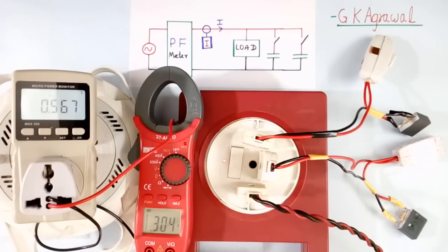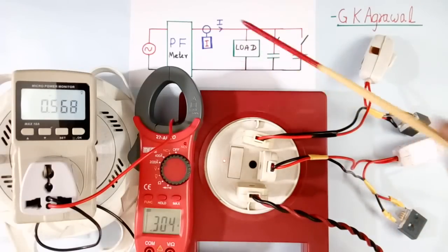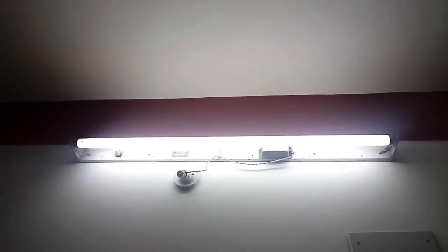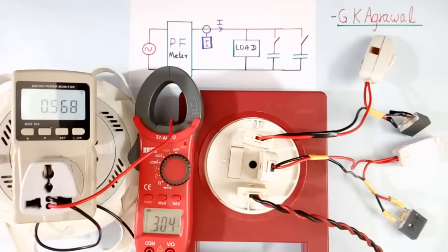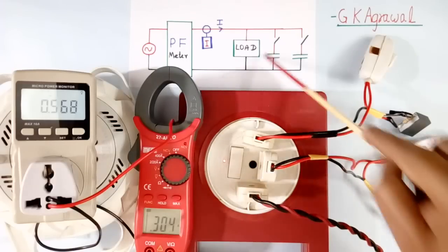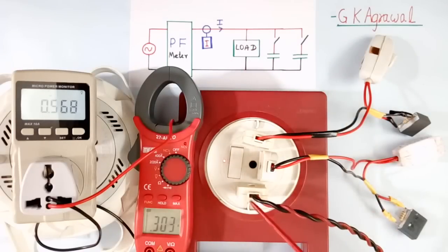Now first we will connect tube light load here. Tube light is on now. Now tube light load is connected. Current is going through this wire.